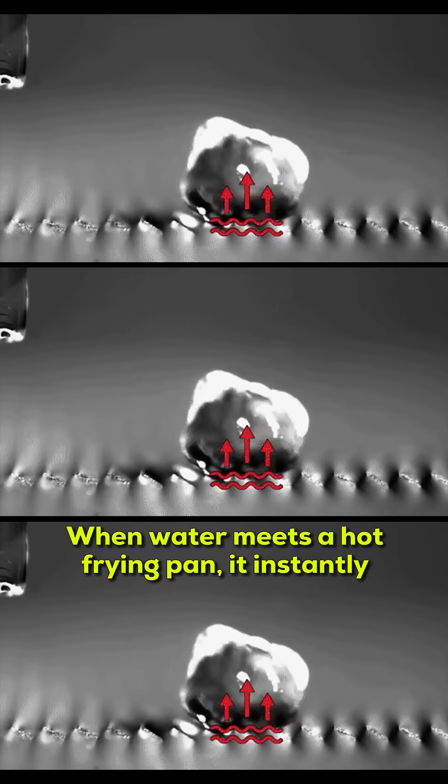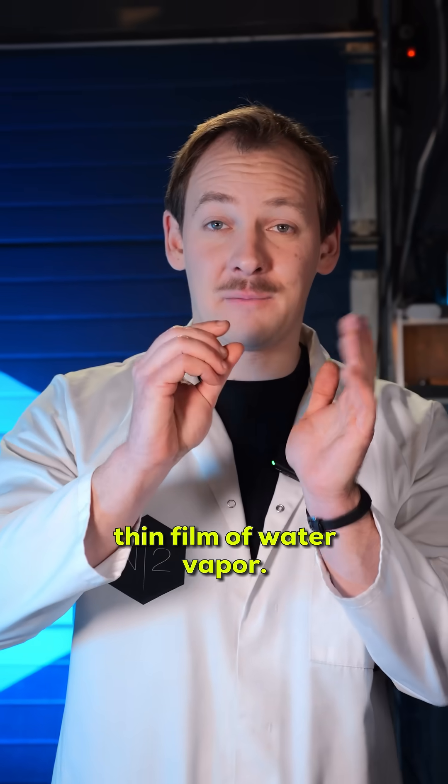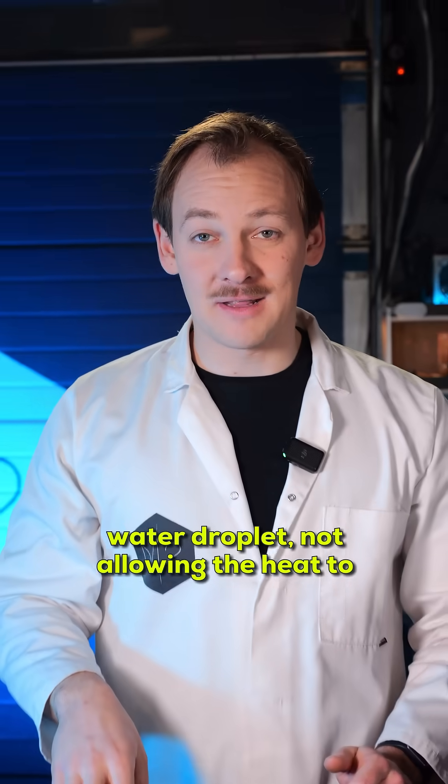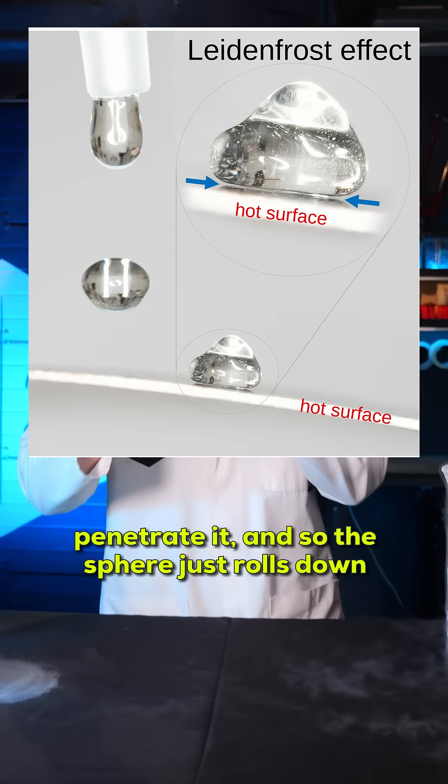When water meets a hot frying pan, it instantly evaporates at the point of contact, forming a thin film of water vapor. That water vapor insulates the rest of the water droplet, not allowing the heat to penetrate it. And so, the sphere just rolls down the frying pan.